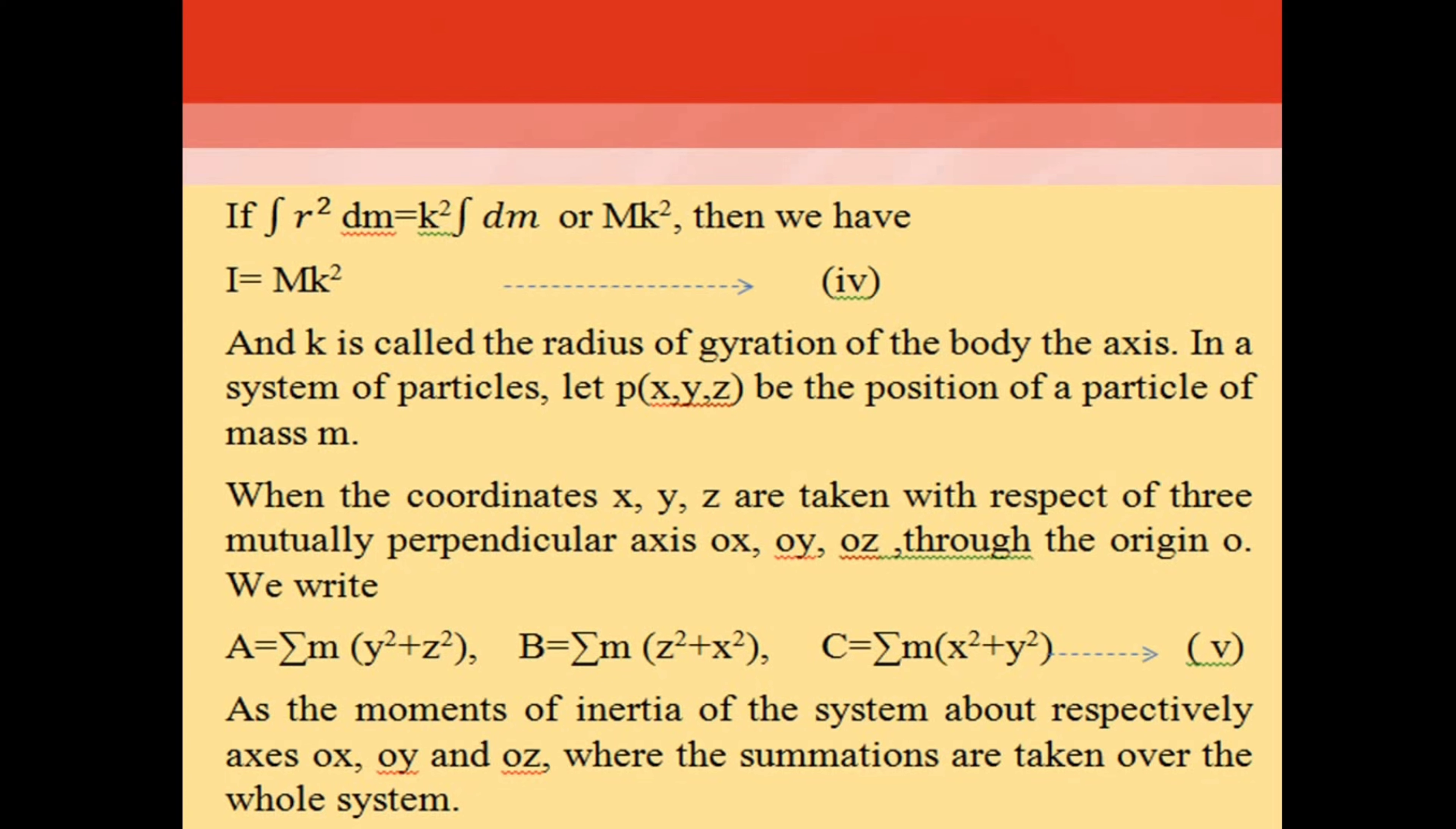When the coordinates x, y, z are taken with respect to three mutually perpendicular axes ox, oy, oz through the origin, we write: A = Σm(y² + z²), B = Σm(z² + x²), C = Σm(x² + y²), equation (v).